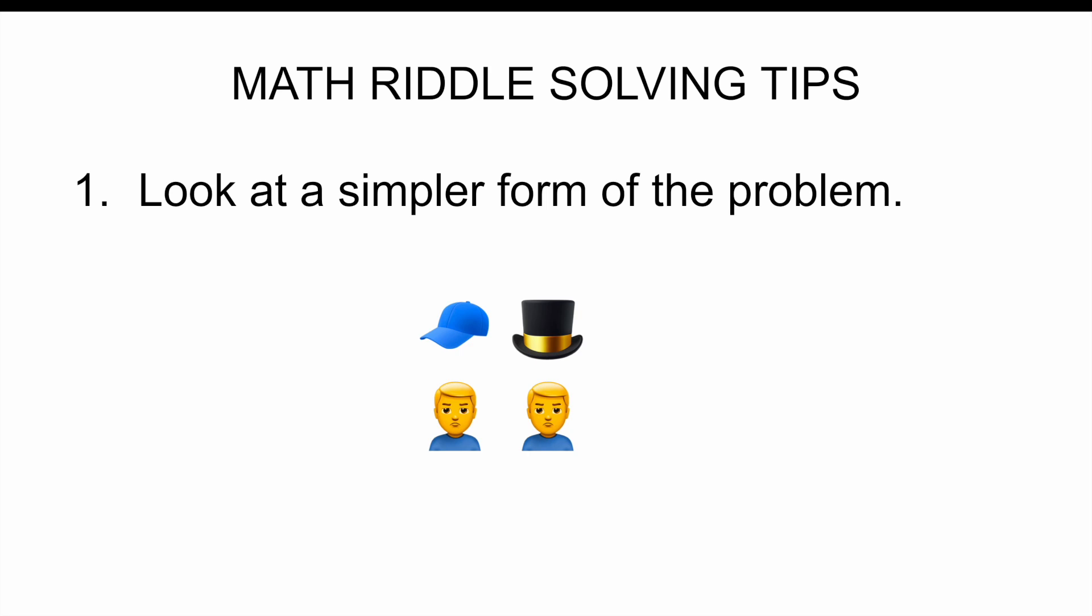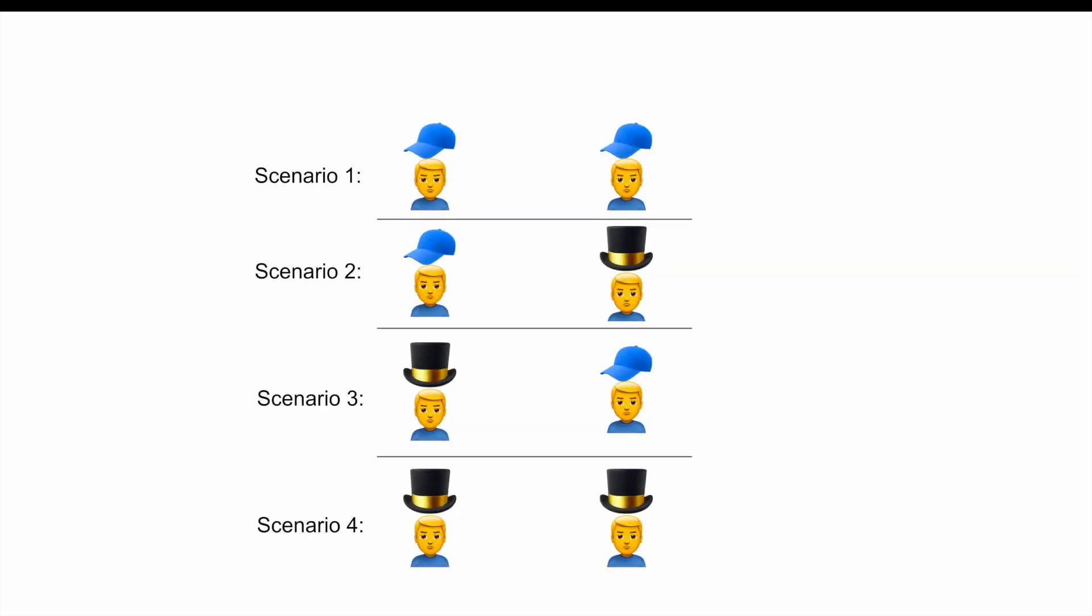If you're ready to see the solution for this simpler problem, without further ado, here are the four possible scenarios. We'll have one prisoner say the same type of hat as he sees on the other, and the other prisoner will say the opposite type of hat than what he sees on the other. This always works because they either have the same type of hat or a different type of hat, so one of them has to be right.